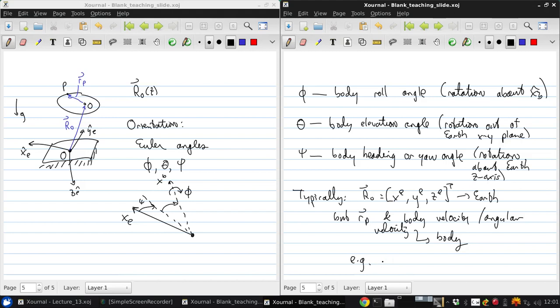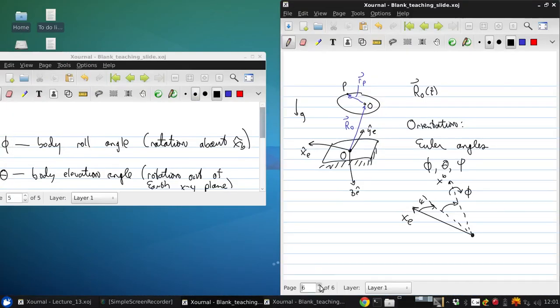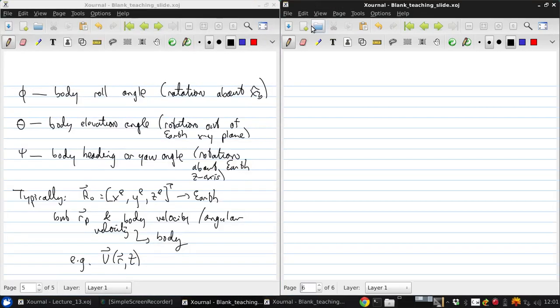So for example, we have the velocity of some function of r and t. To go back and forth, we need to use the transformation matrices that we developed earlier. So uE is TEB times uB. Here, the transformation matrix is formed as the product of three simple single-axis rotations, one for each Euler angle. And as you may or may not have learned, in three dimensions, the sequence of angular rotations matters.